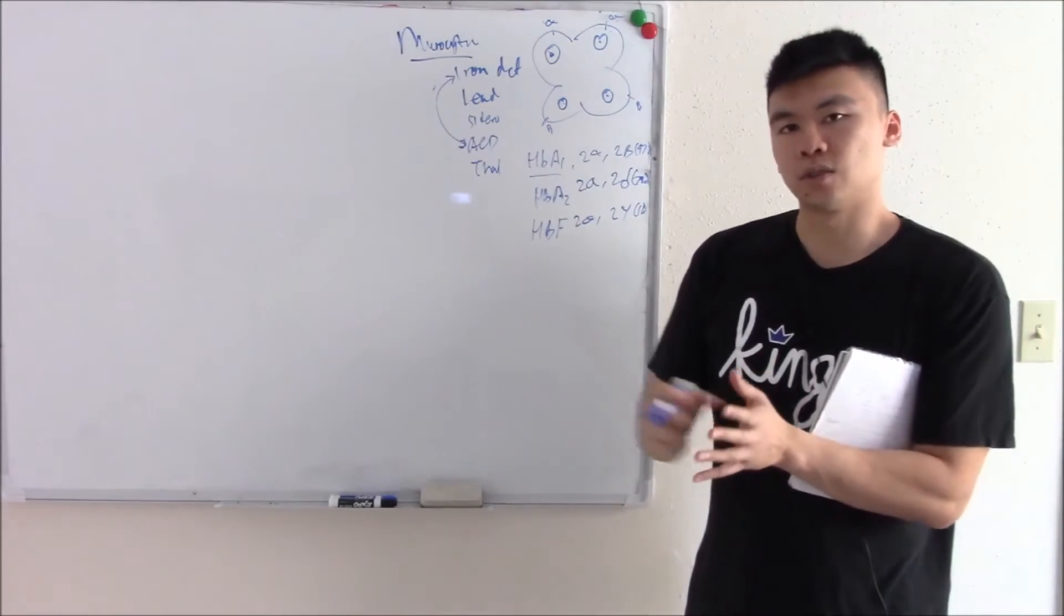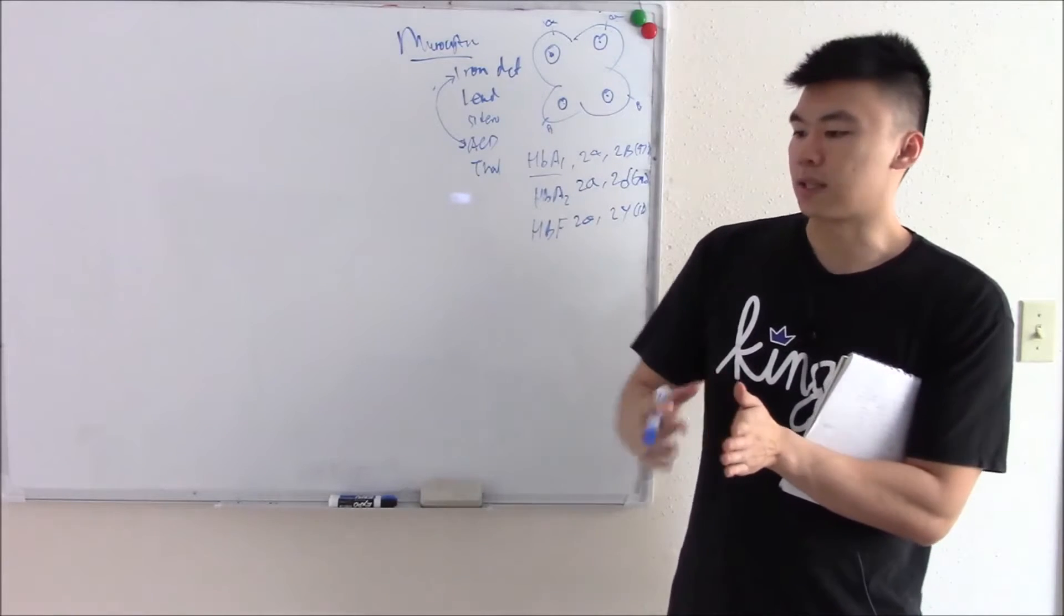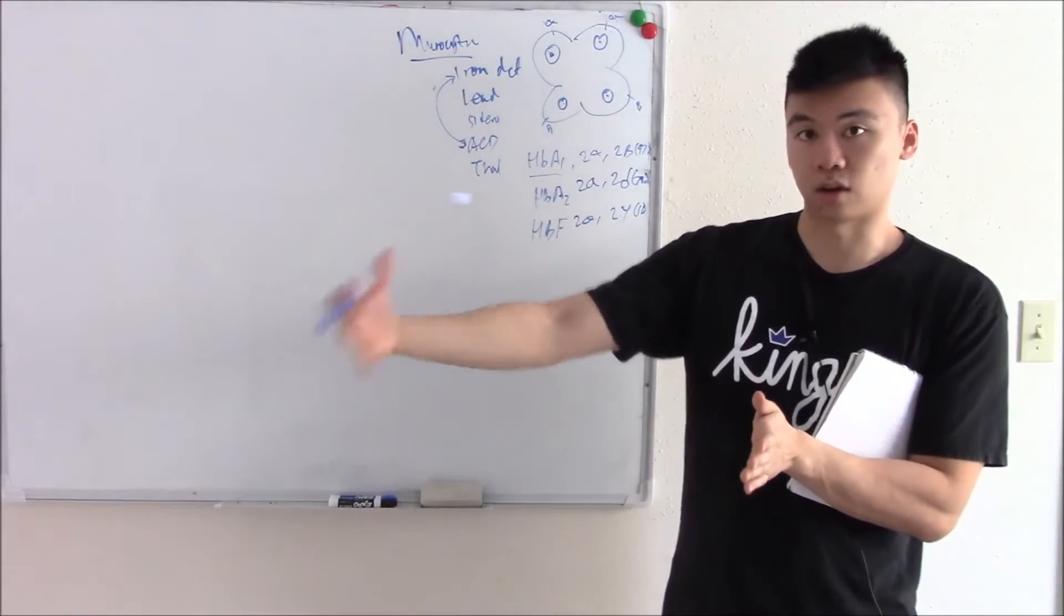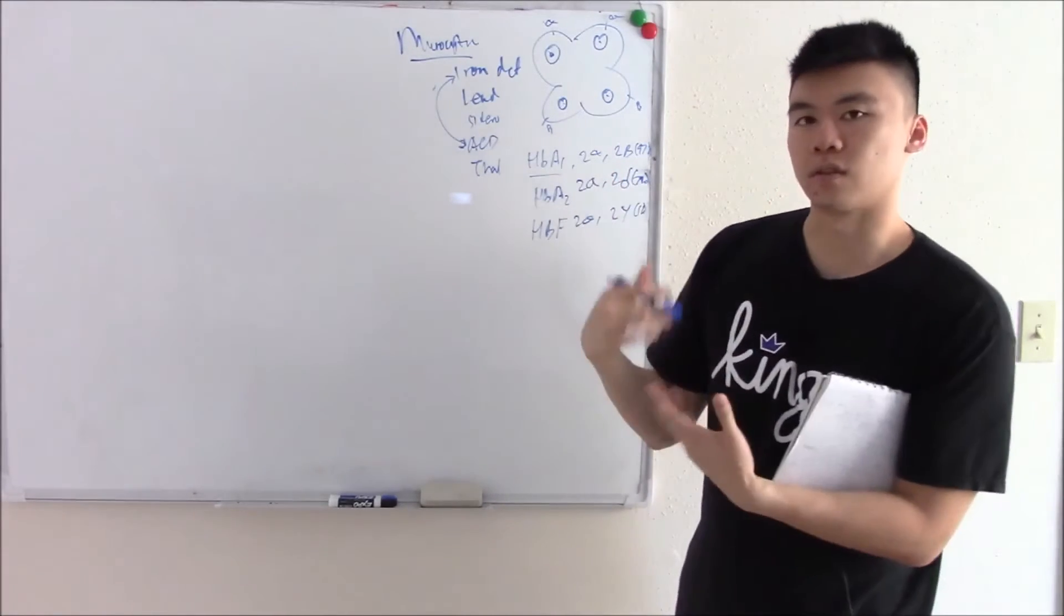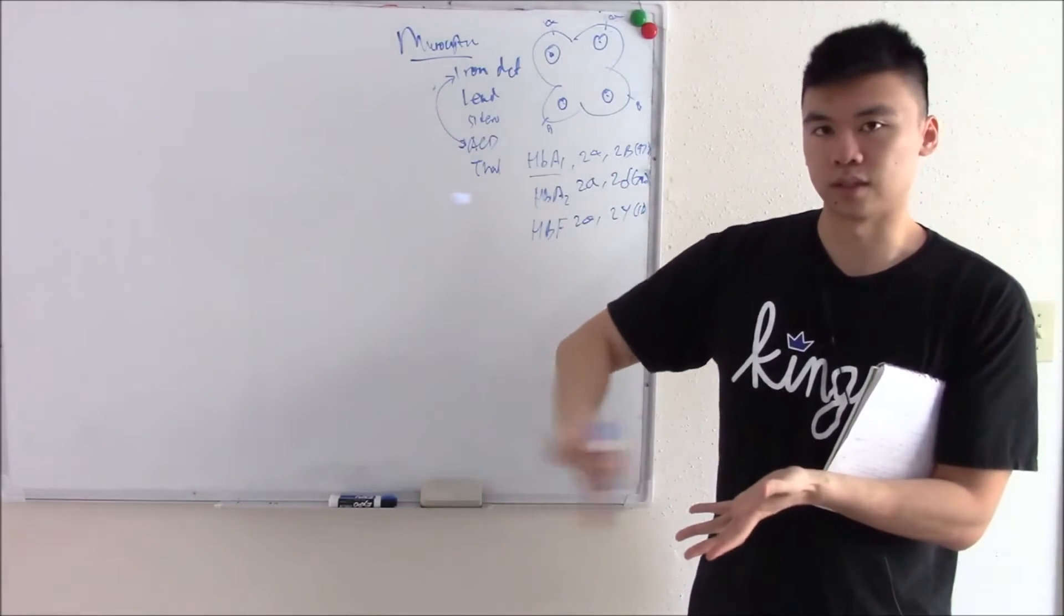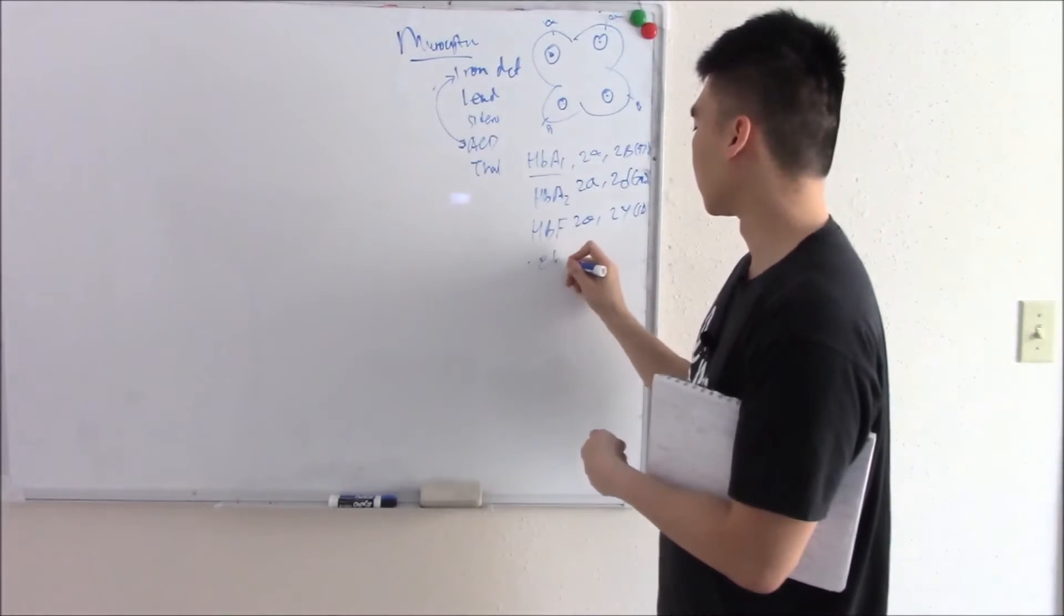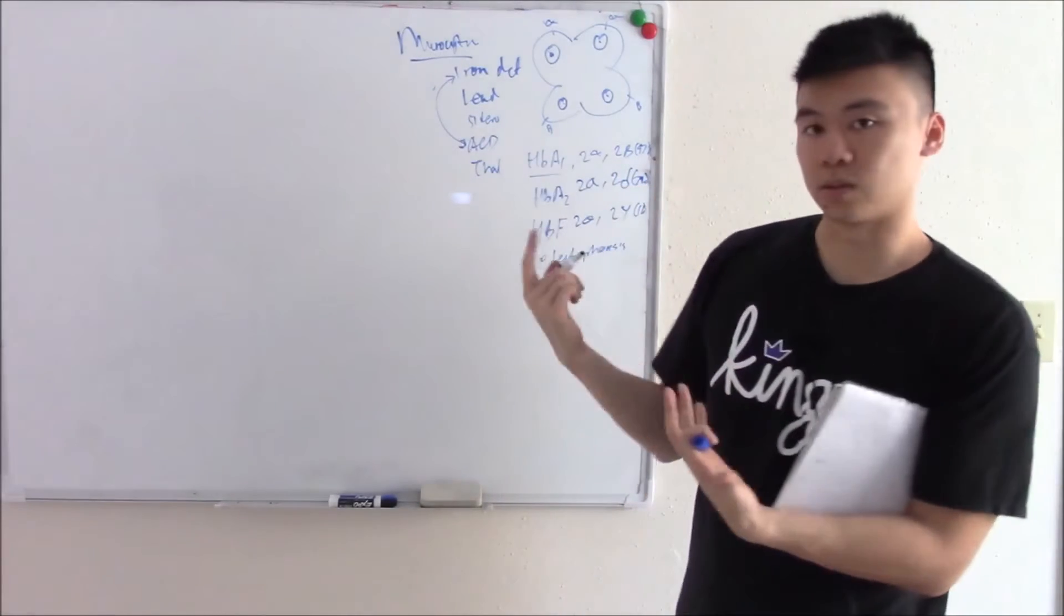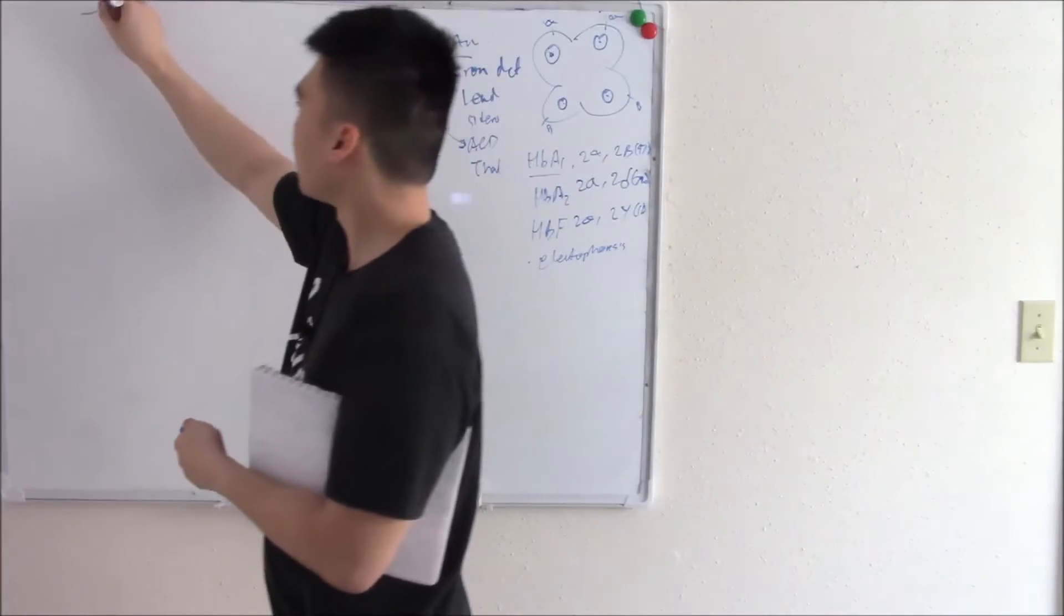How can we tell what percentages make up our blood? We can separate the globin chains through electrophoresis. So they all have different characteristics. We can separate our globin chains and see how many globins are there for alpha, beta, delta, gamma. By separating them, we can visualize that. And that's how we found out we had 97% HbA1.